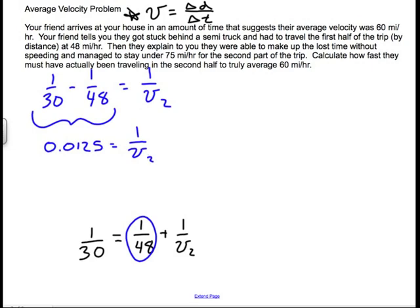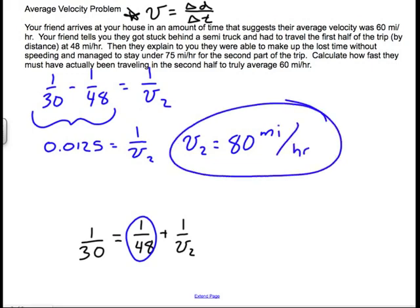And if I inverse both sides of this now, so that I have V2 in the numerator, I will find that V2 is equal to 80—and again, I'm going to pull back my units—miles per hour. So this is my final answer here. And if you come up and look at the way that the problem is stated...